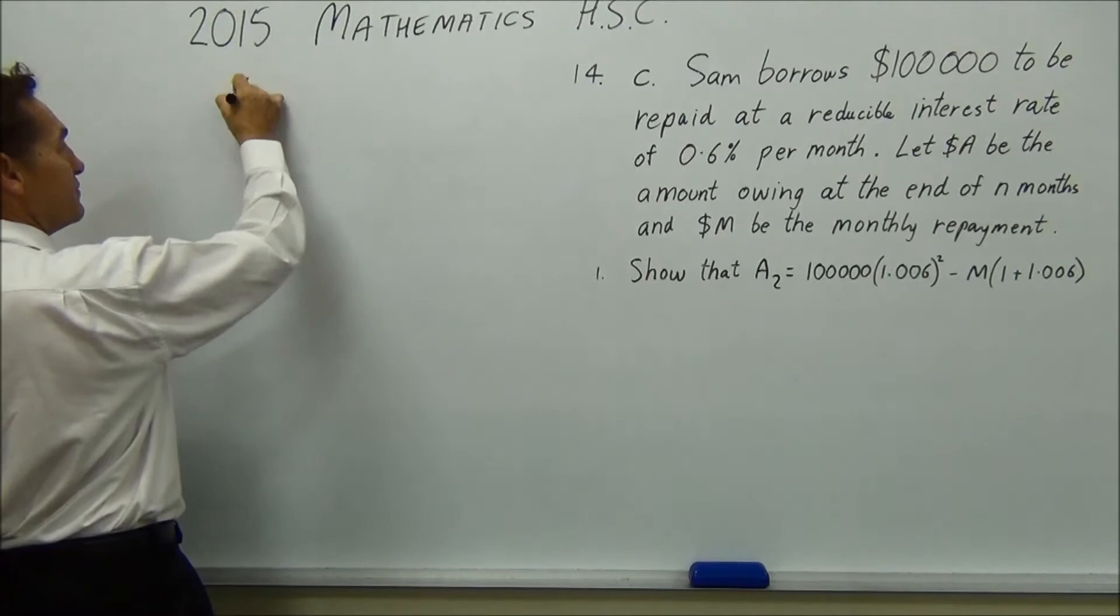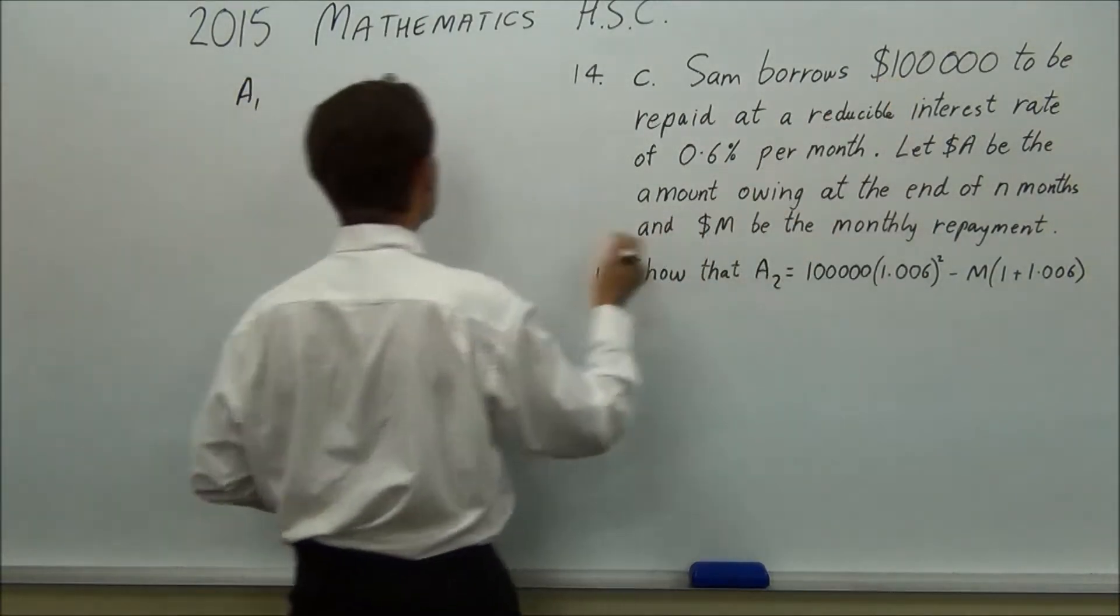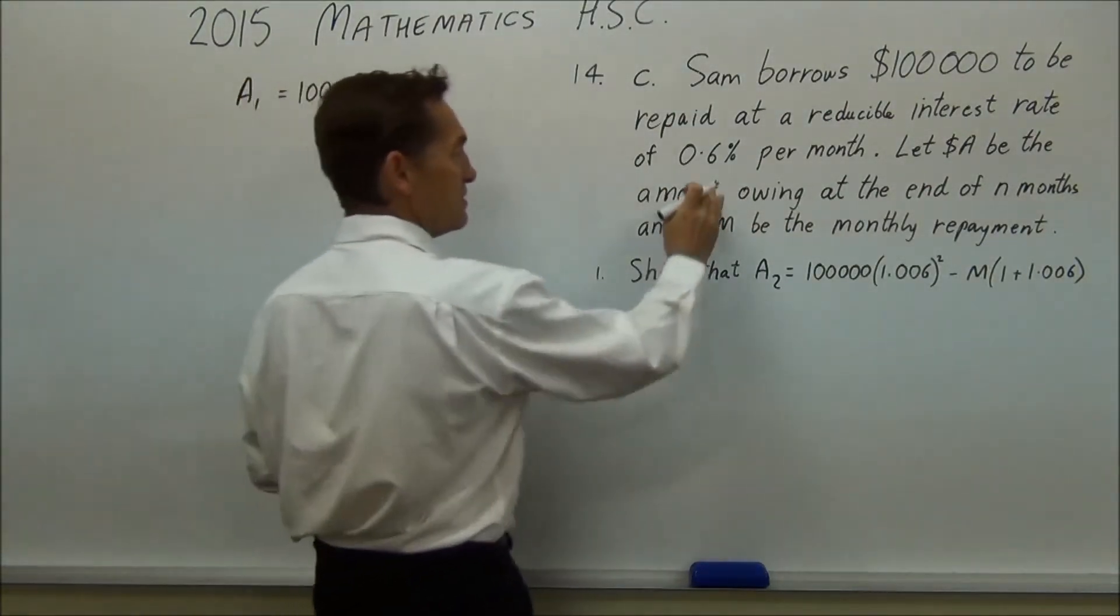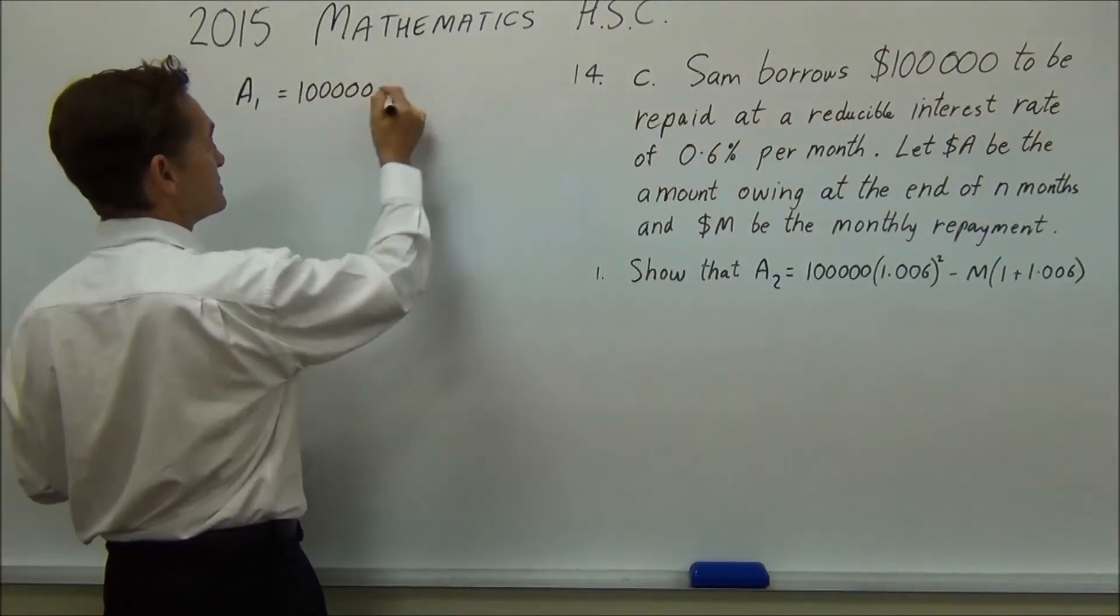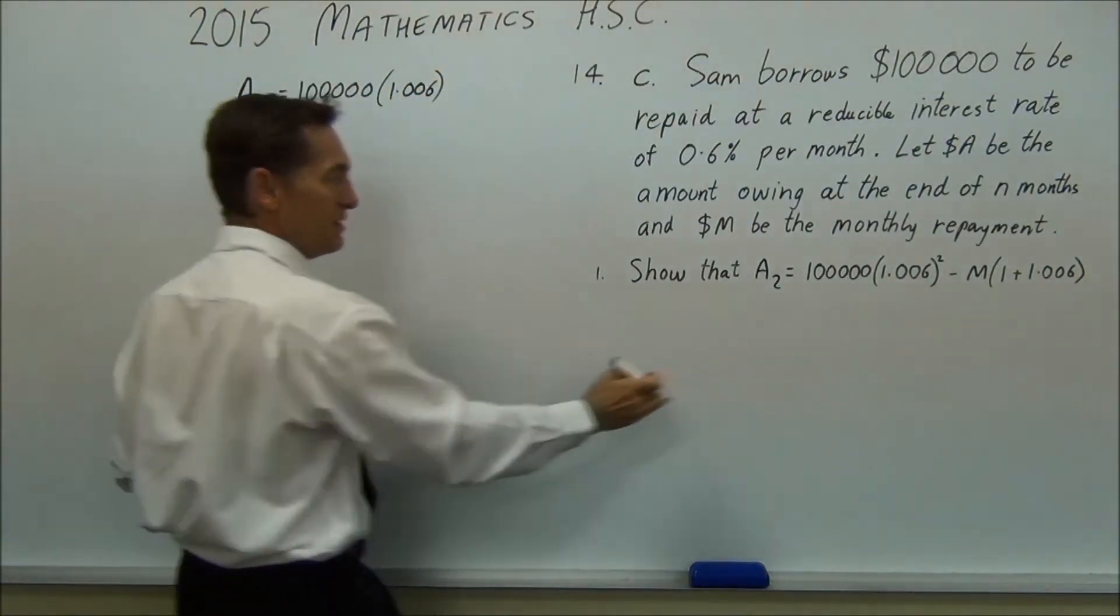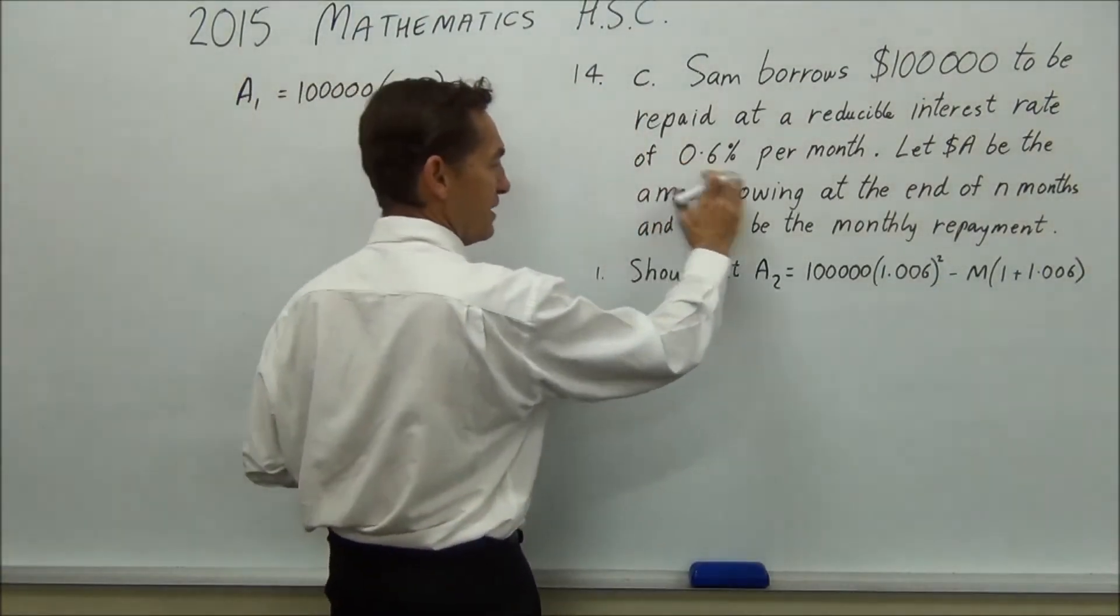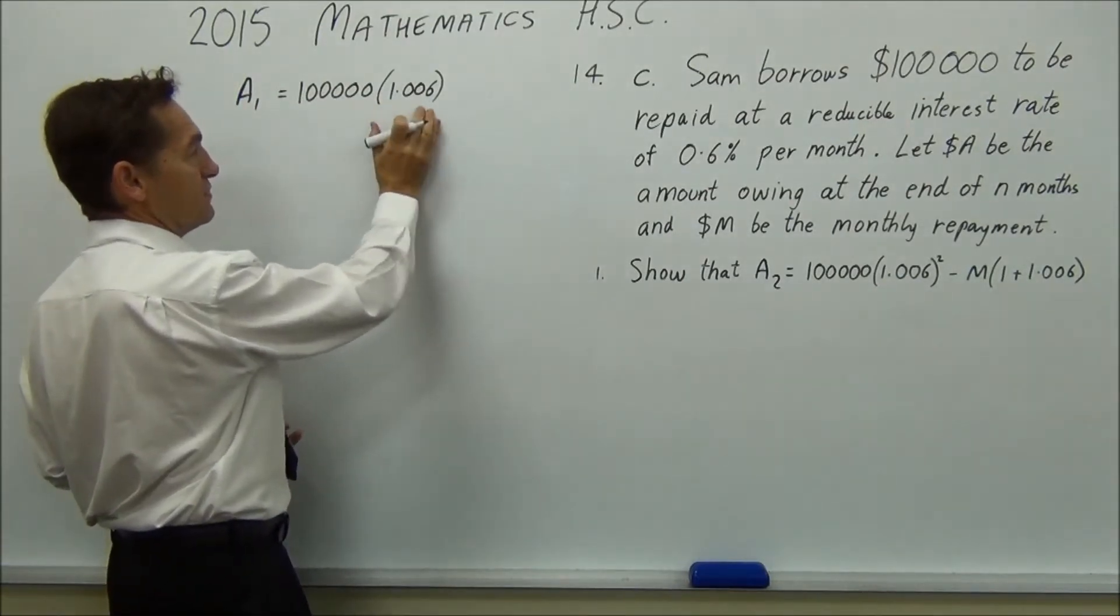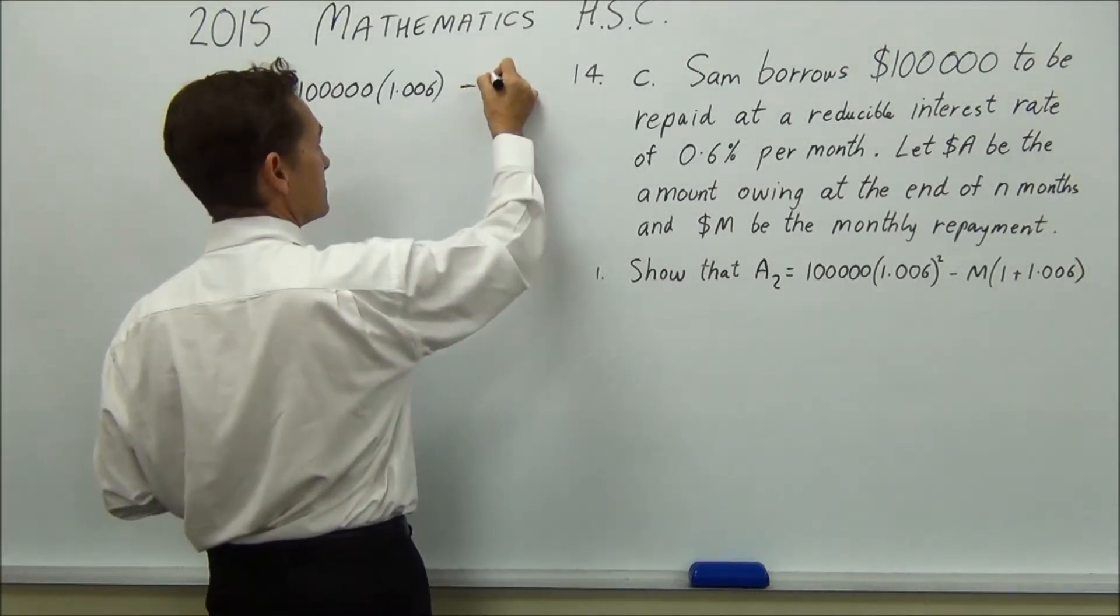So at the end of month one, what's happened? Well, he's borrowed this much, and there's an interest rate happening onto the amount of money. So you've got this multiplied by 1.006. Now it's a bit of a giveaway, but they've written the number there. You don't really have to think or do any calculations to try and transfer that. It's pretty obvious. So at the end of one month, you've got this amount of interest added onto it, and you're subtracting some repayment.